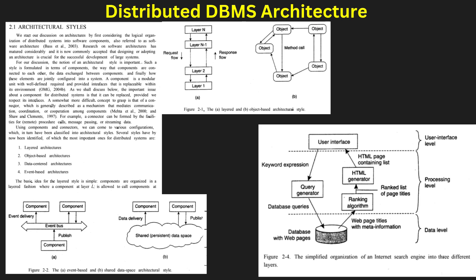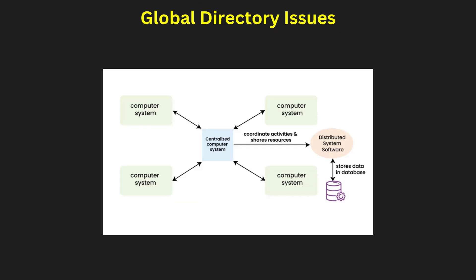A global directory in a distributed DBMS maintains metadata about distributed data location, structure, and access paths. It is essential for efficient query processing, data retrieval, and system coordination. One major challenge is consistency — the directory must be updated when data is modified. Scalability issues arise when handling large volumes of data spread across multiple sites. Synchronization delays can cause outdated directory information, leading to incorrect query results.